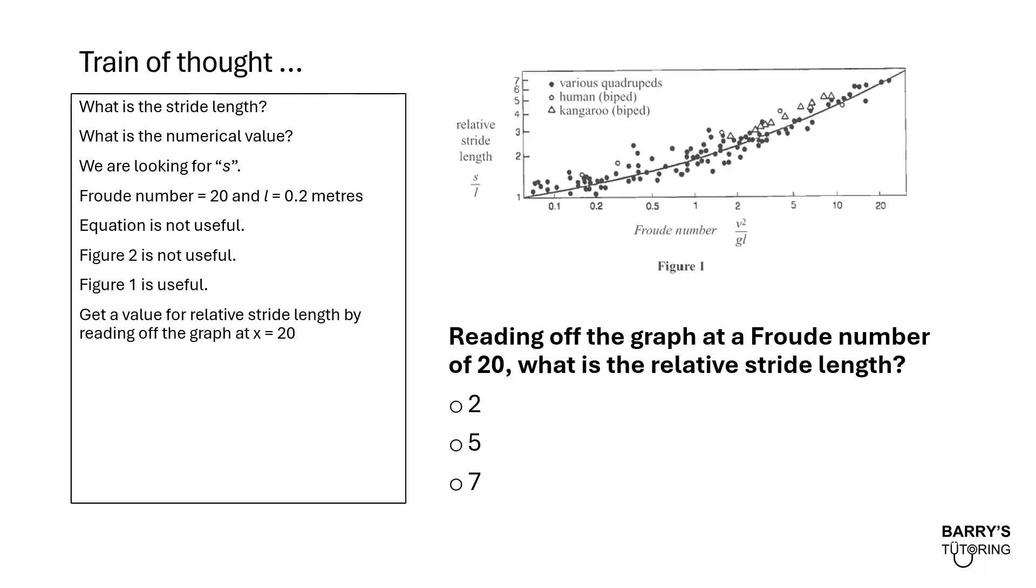Reading off the graph at a Froude number of 20, what is the relative stride length? This shouldn't take you long, guys. Just looking off the screen. Do you think it's closest to 2, 5, or 7? We're reading a value of 20 from the Froude number. What relative stride length? The closest is 7. Let's keep on going.